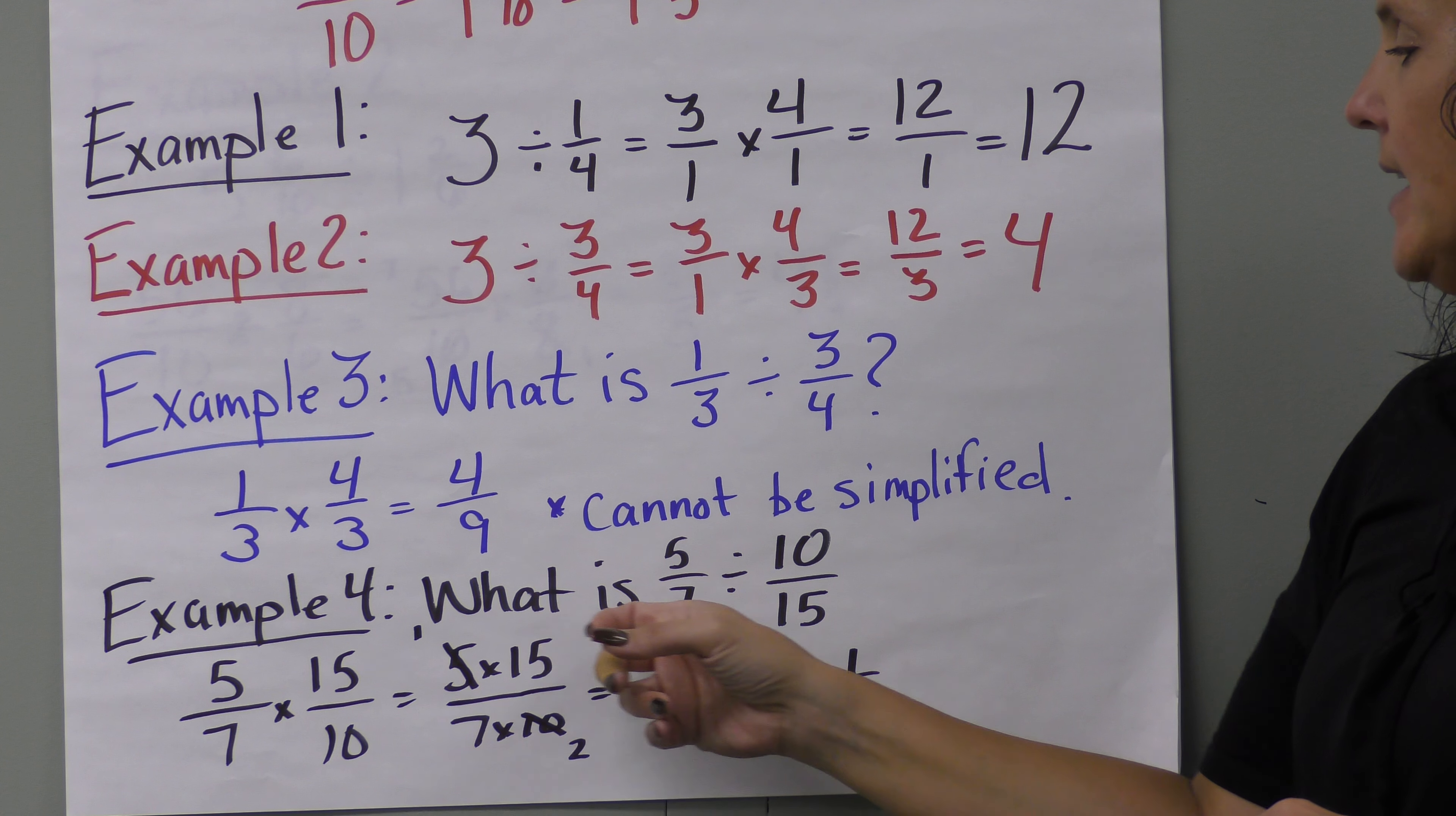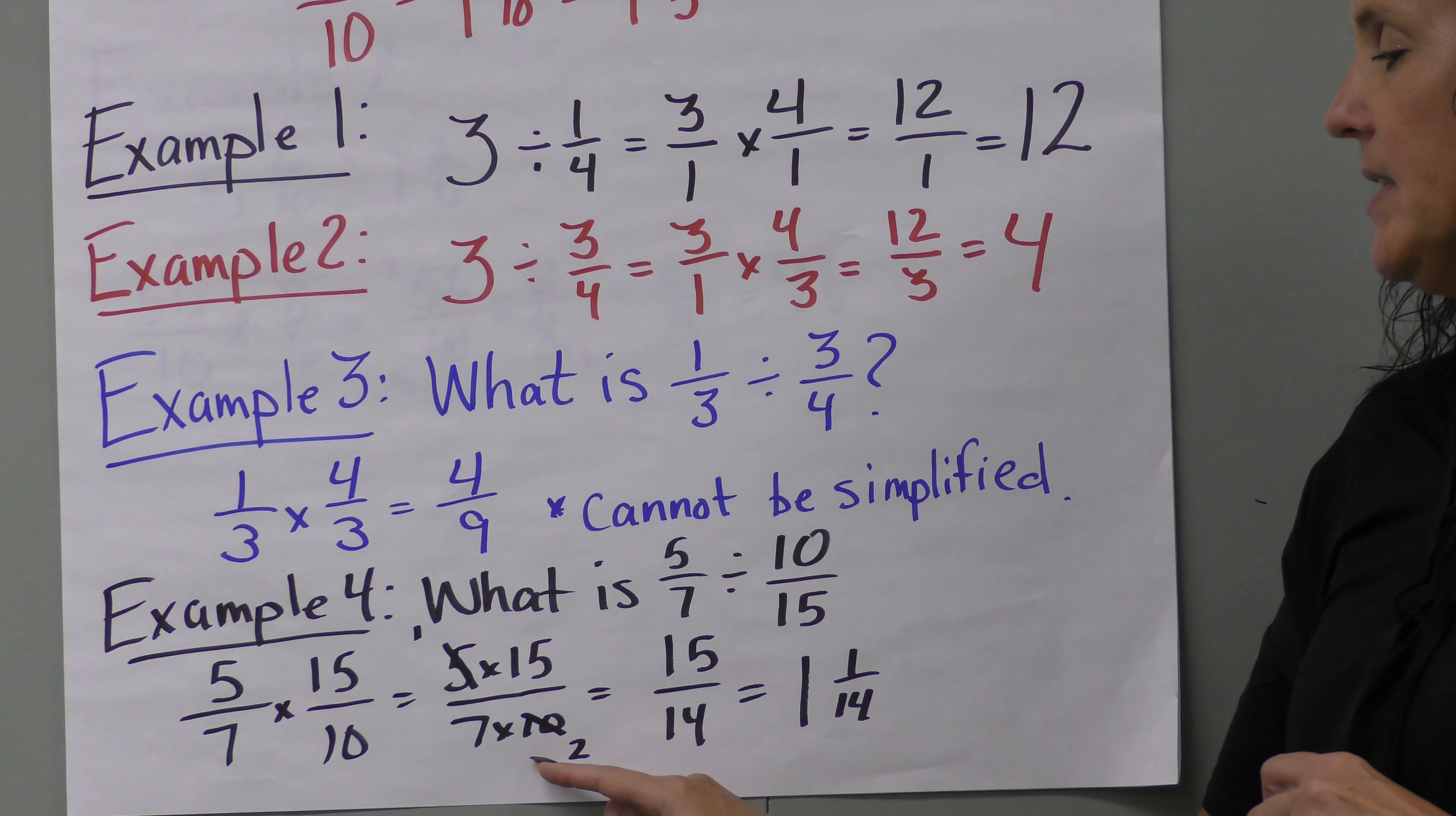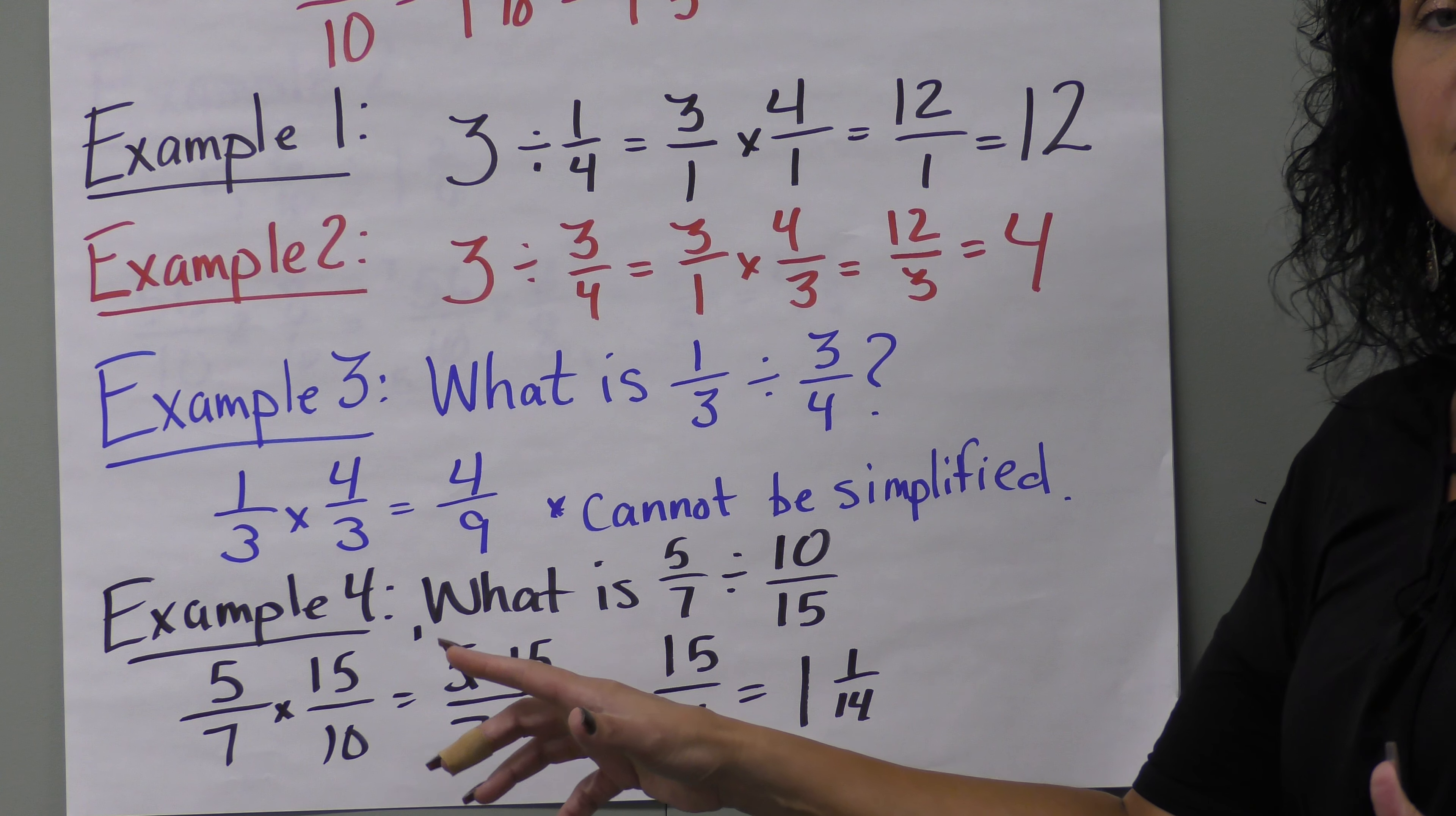Example four: what is five-sevenths divided by ten-fifteenths? We bring five-sevenths down and invert ten-fifteenths to fifteen over ten. We have five times fifteen over seven times ten. But we can simplify before we multiply using cross multiplication. Five goes into ten two times, so we change the five to a one.